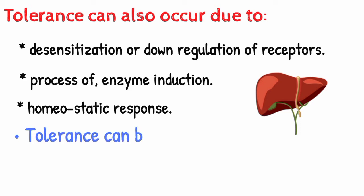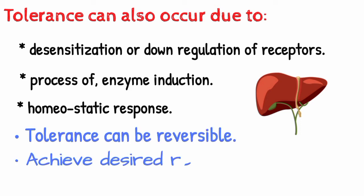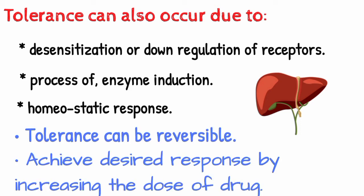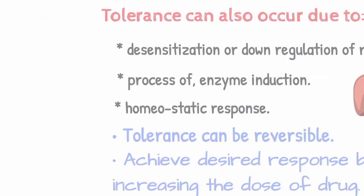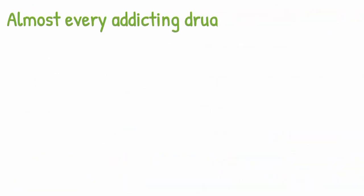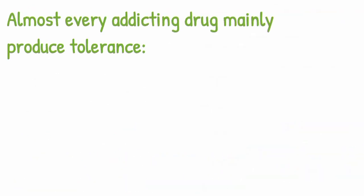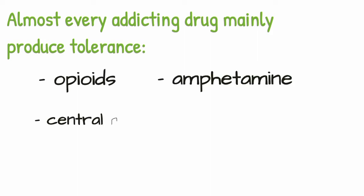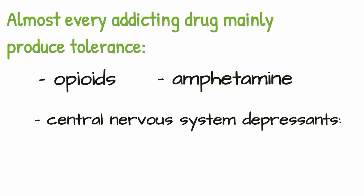Tolerance can be reversible, as we can achieve the desired response by increasing the dose of the drug. Almost every addicting drug mainly produces tolerance, which includes opioids, amphetamine, and some central nervous system depressants like sedatives and hypnotics.